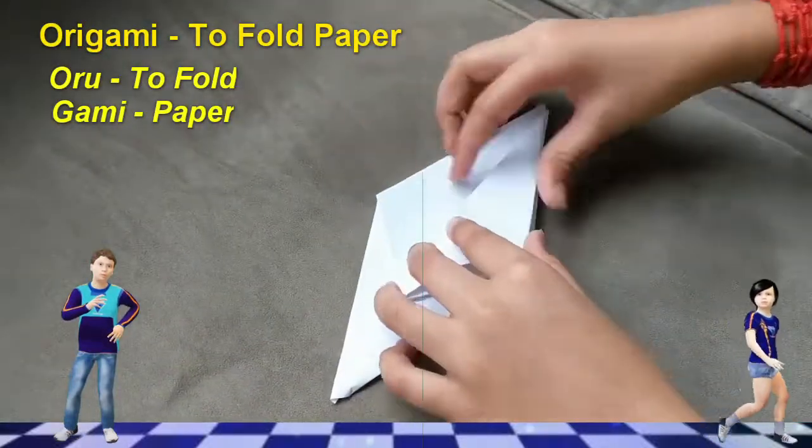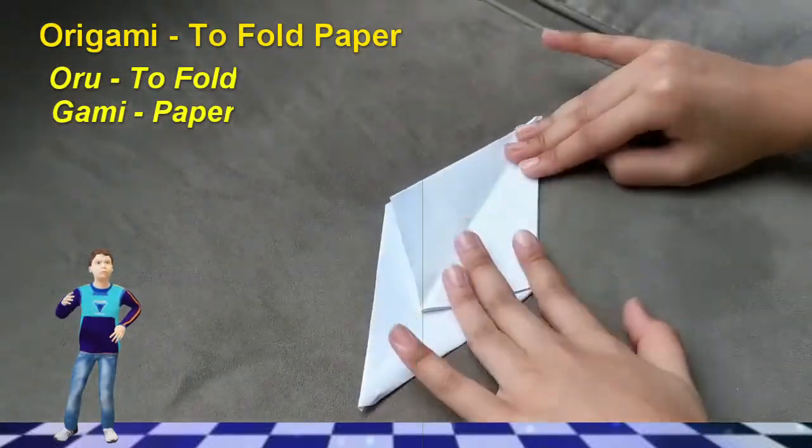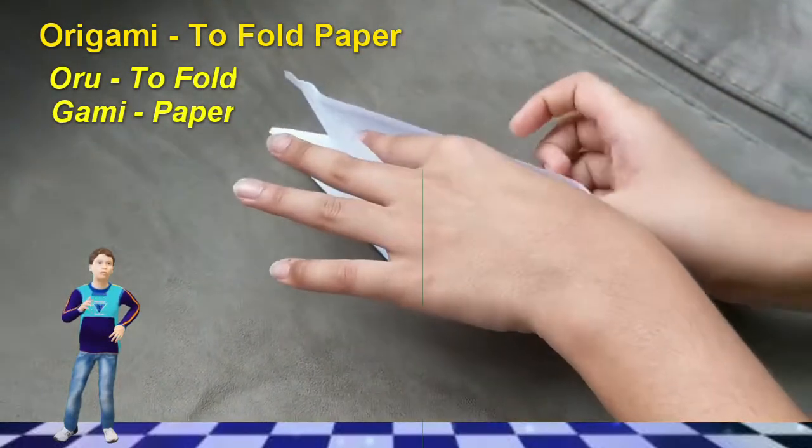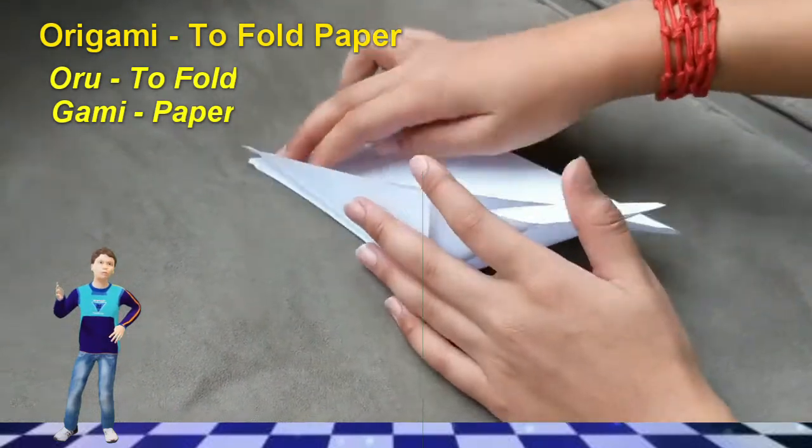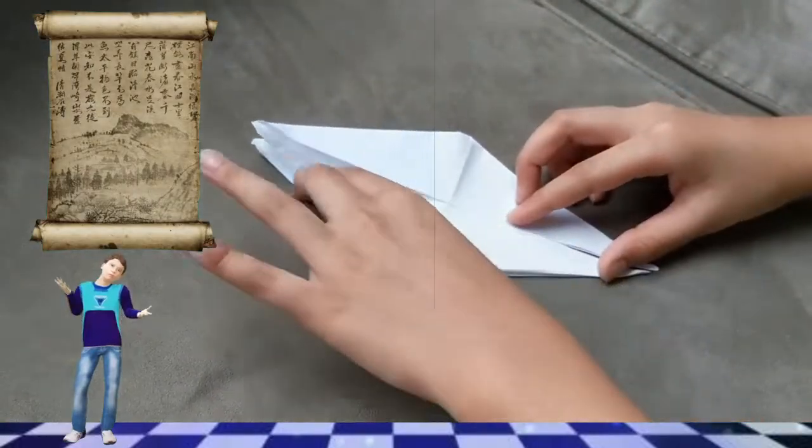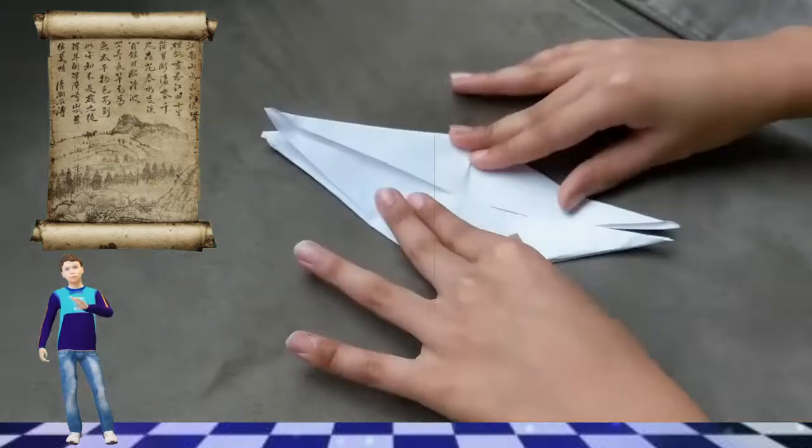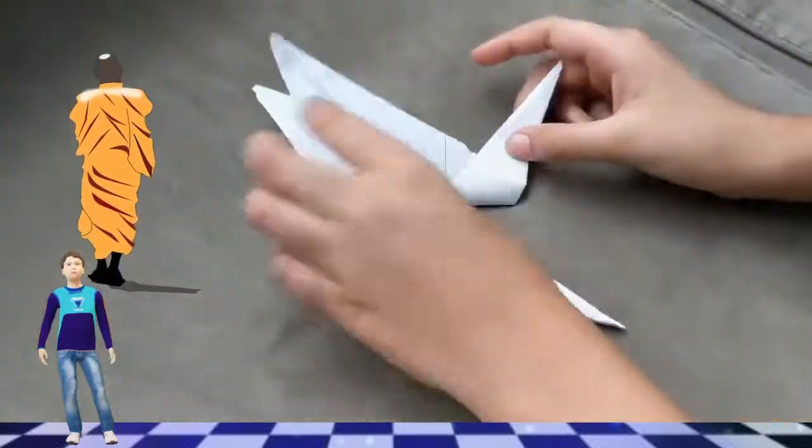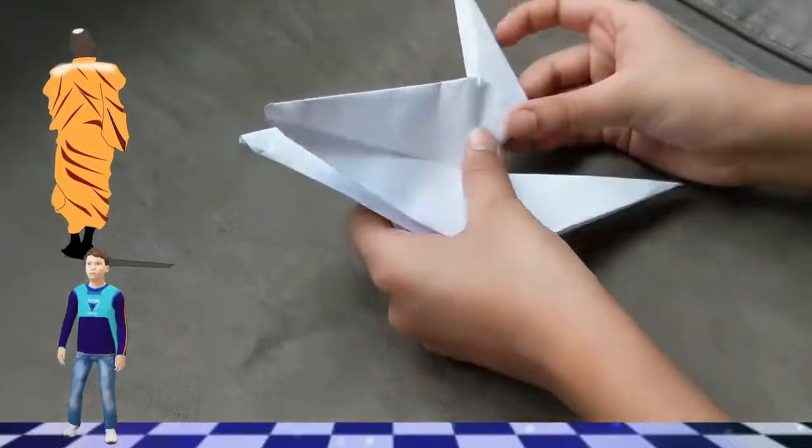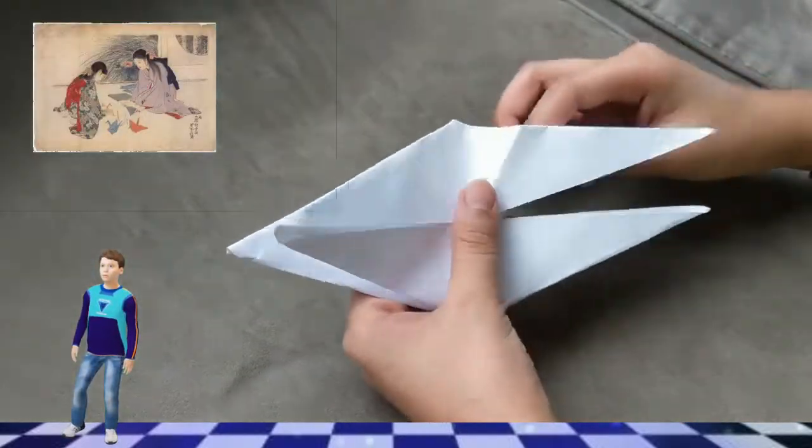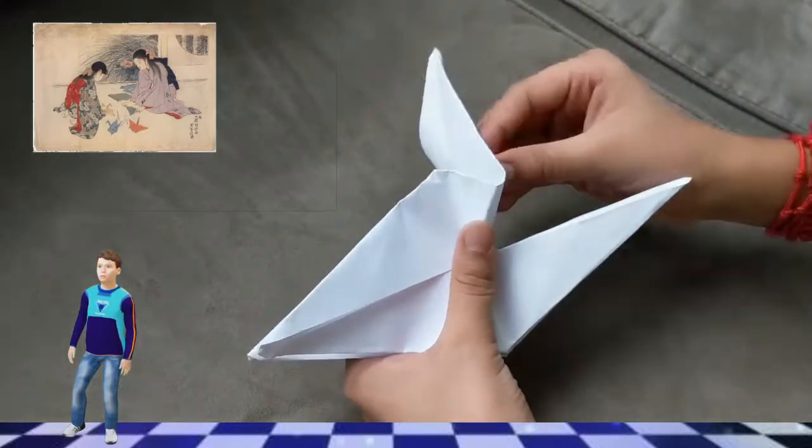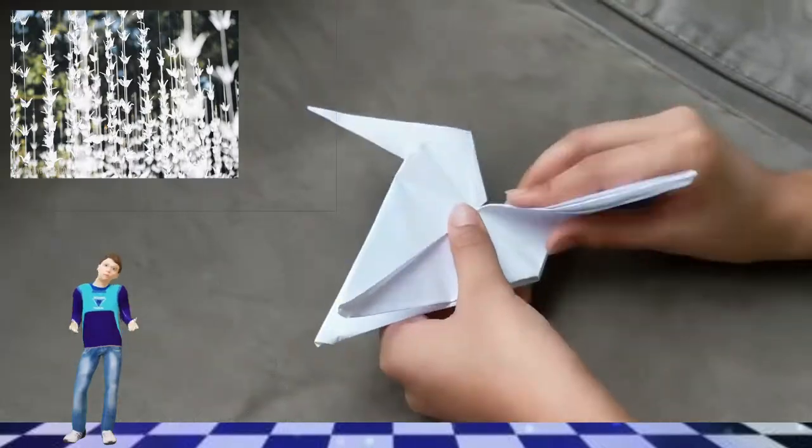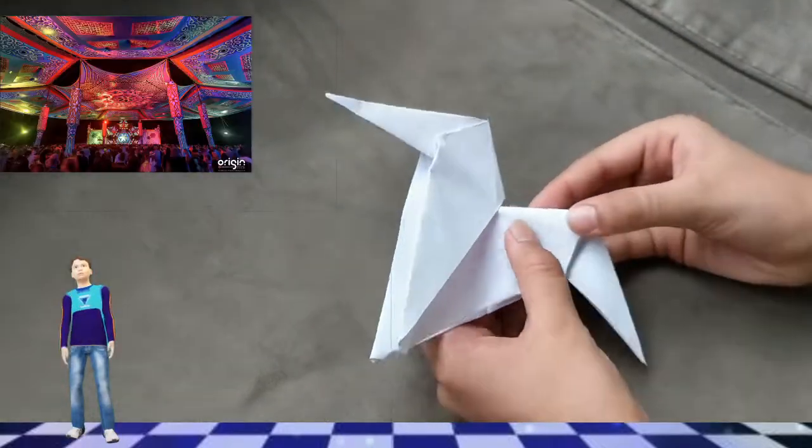Origami. Composed of two Japanese words oru to fold and kami as paper. Joined together to fold paper. Origami. Paper was first invented in China around 105 AD and was brought to Japan by monks in the sixth century. Handmade paper was luxury item only available to a few and strictly for ceremonial purposes often religious in nature.